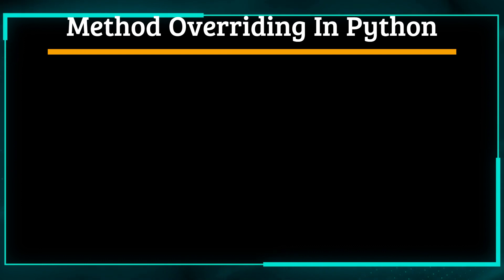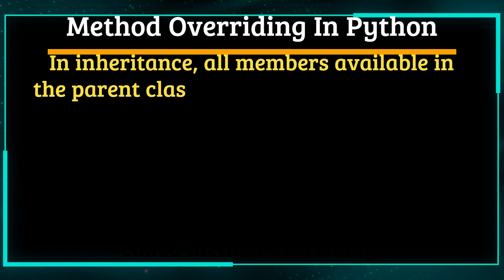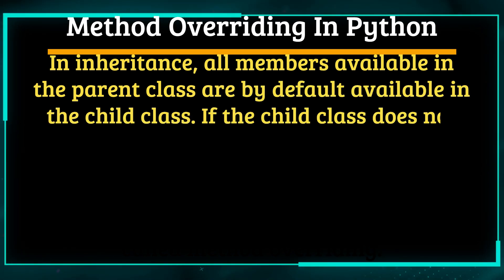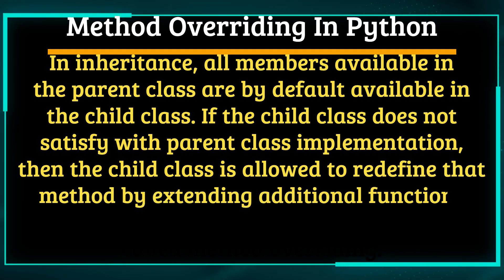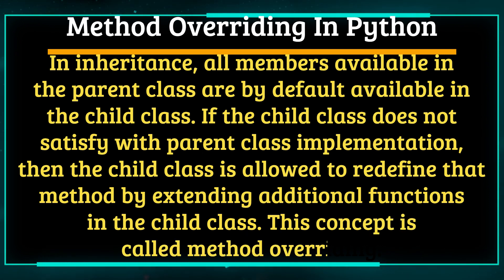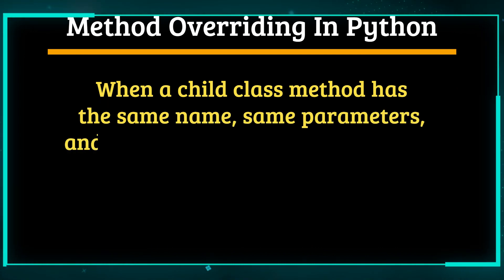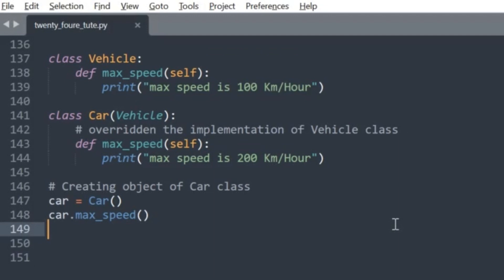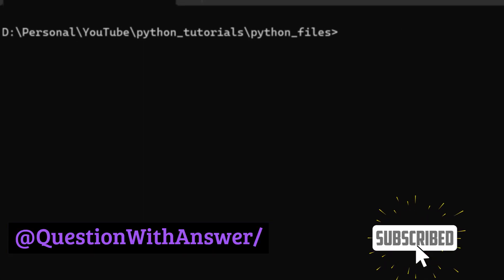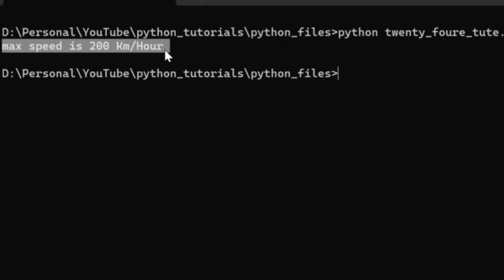Method overriding in Python: In inheritance, all members available in the parent class are by default available in the child class. If the child class does not satisfy with the parent class implementation, the child class is allowed to redefine that method by extending additional functions — this concept is called method overriding. When a child class method has the same name, same parameters, and same return type as a method in its superclass, the method in the child is said to override the method in the parent class. In this example, we create Vehicle as a parent class and Car as a child class. Car extends Vehicle, so all properties of the parent class are available in the child class. In addition, the child class redefines the method max_speed — if you run this example, this will override the max_speed method of the parent class, as shown in the output on the screen.